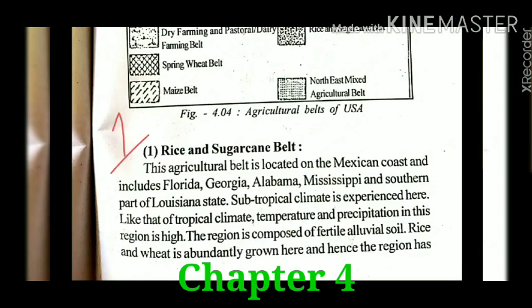The first belt is the rice and sugarcane belt. This belt is located on the Mexican coast and it includes Florida, Georgia, Alabama, Mississippi, and the southern part of Louisiana state. The climate here is subtropical, found mainly between 25 to 35 degree latitude. The temperature is high, precipitation is also quite good, the soil is fertile, and rice and wheat are abundantly grown here. Bananas and pineapple are also grown here.